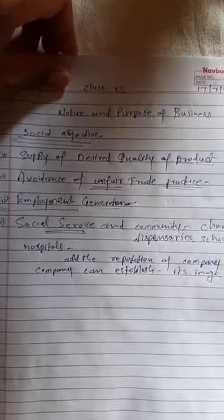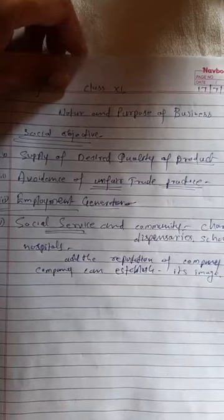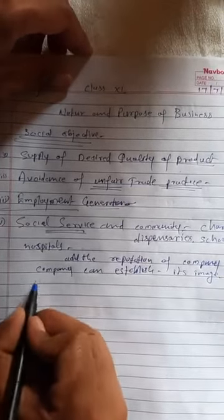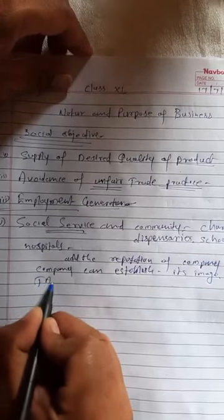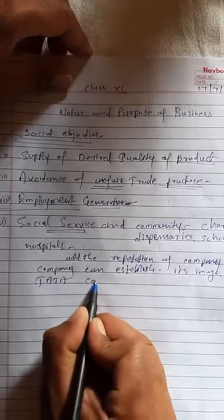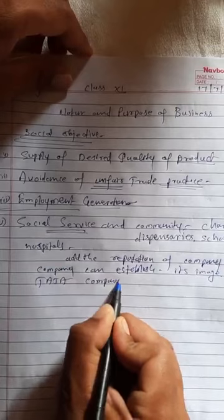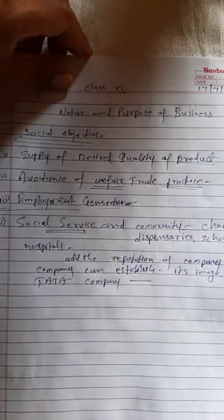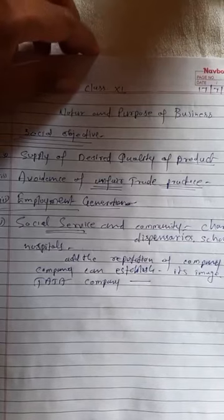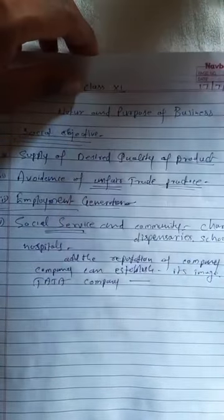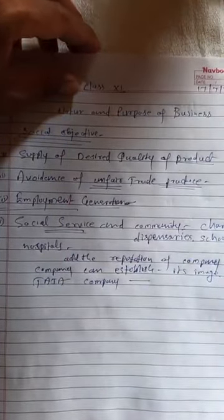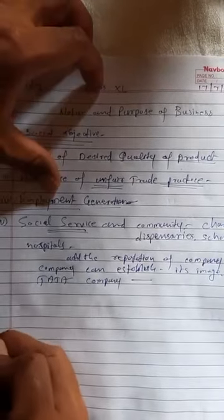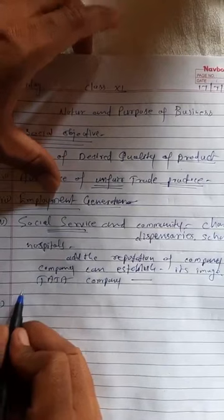For example, Tata company spends a fixed amount of funds every year on social service projects such as schools, hospitals, and medical dispensaries. The fifth social objective is avoidance of pollution.